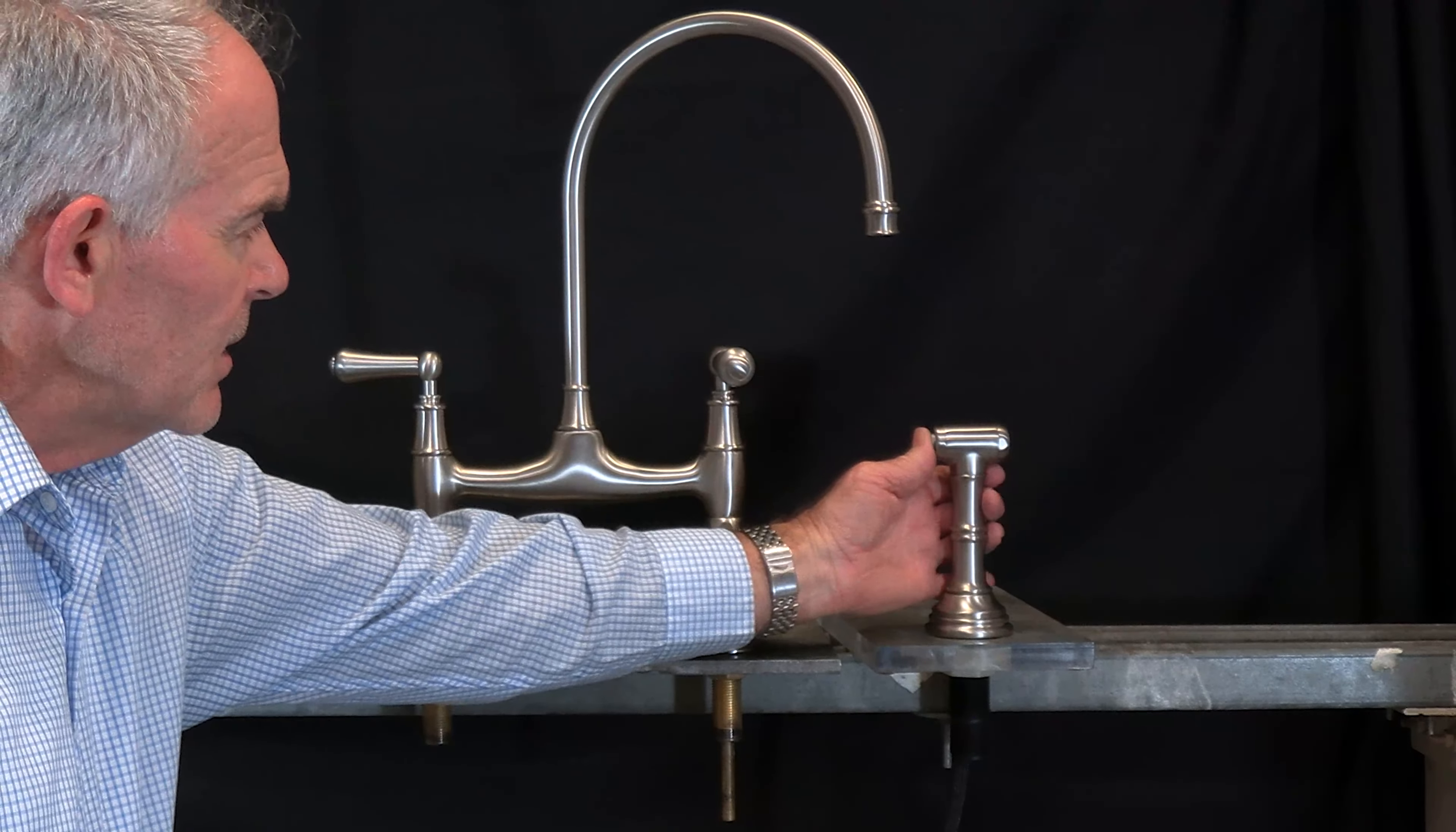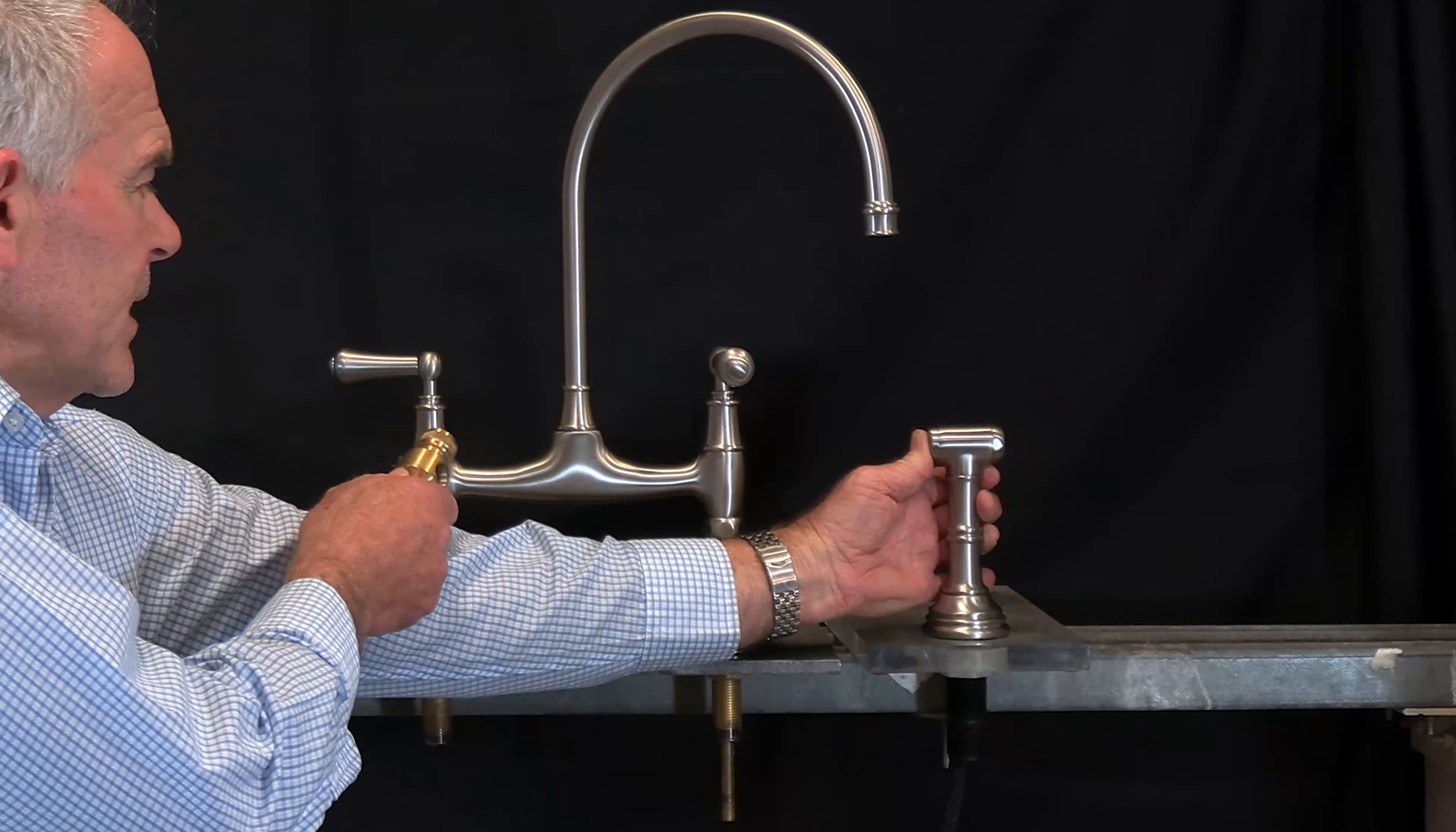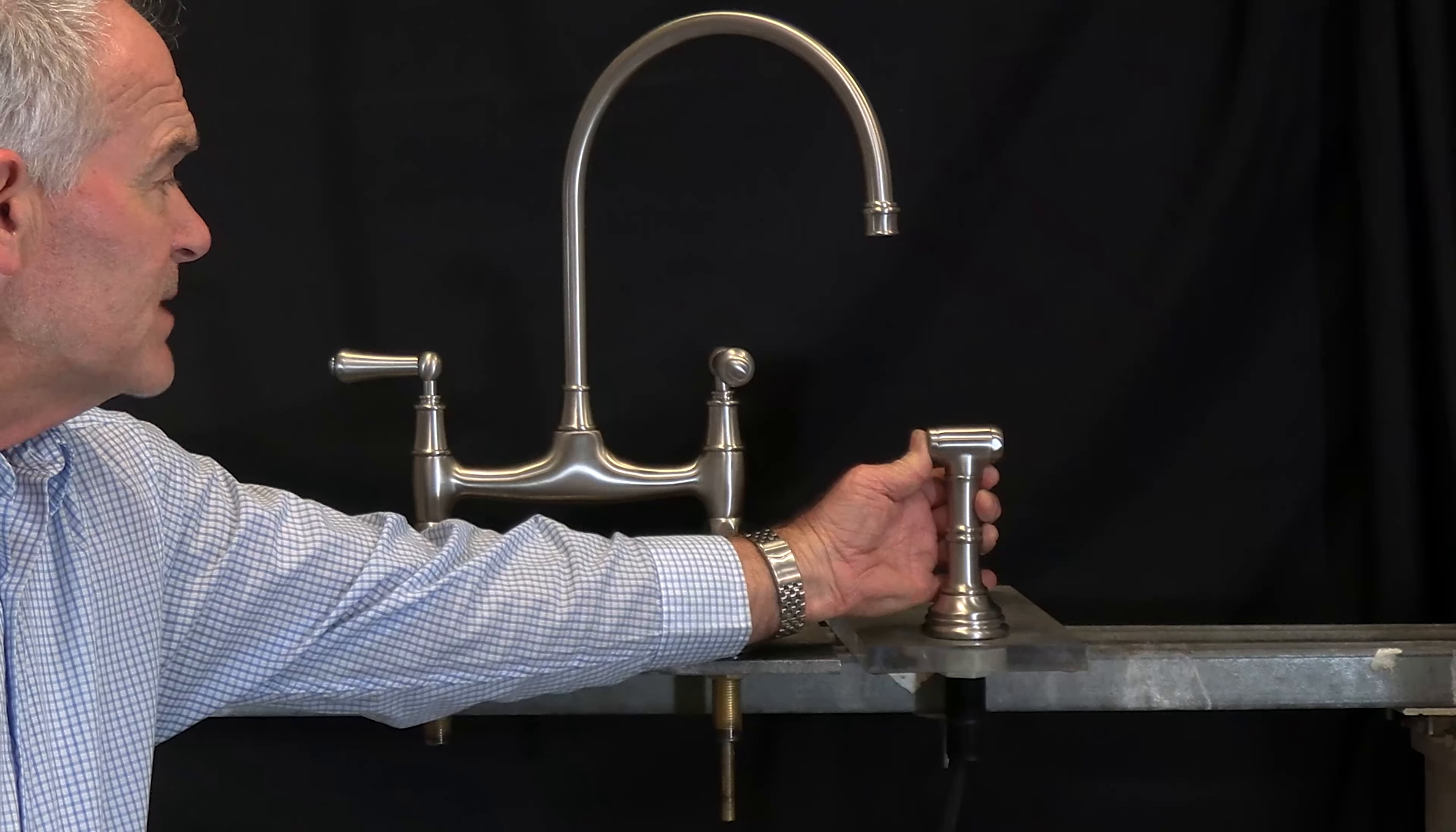When you then hit the button on the hand spray, the diverter on the inside of the bridge activates. The water to the spout goes off and all the water comes out of the hand spray.